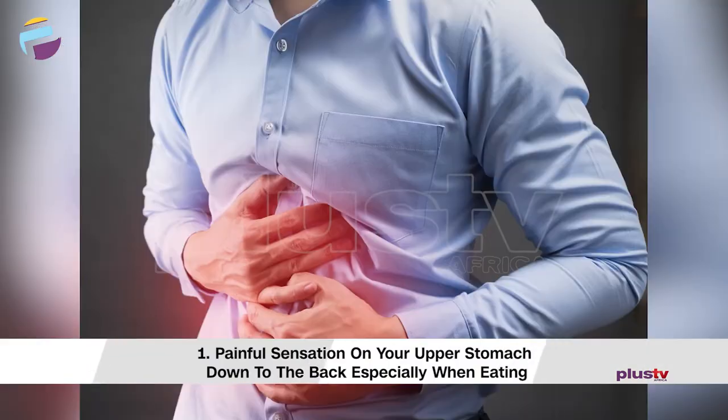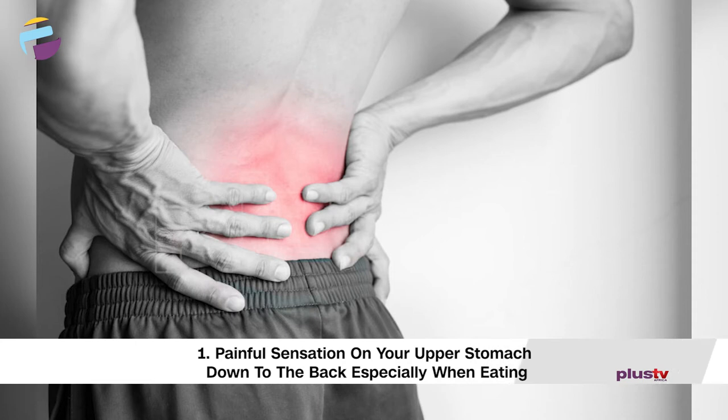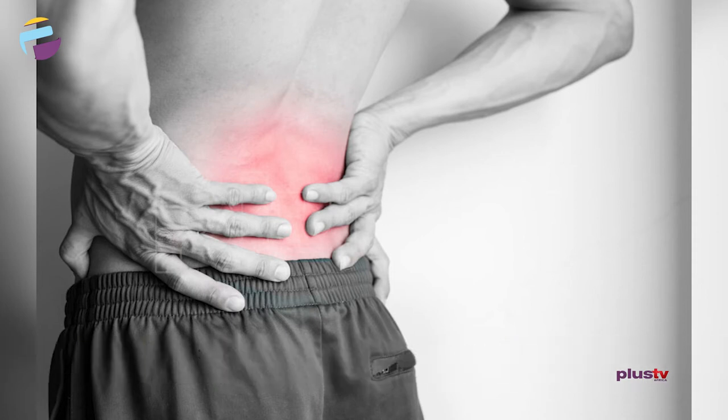The remarkable symptoms of peptic ulcer disease include a painful sensation in your upper stomach that often radiates to the back. Many people self-diagnose peptic ulcer disease when they actually don't have it — they come to hospital saying they have ulcer because an aunt or uncle told them so. You have to have a proper diagnosis, including a test for H. pylori.